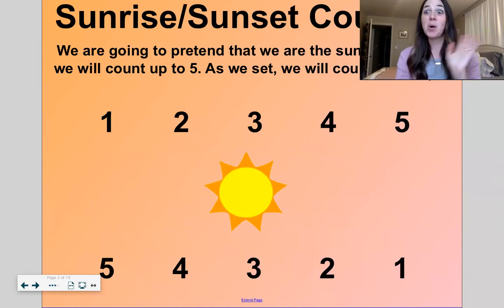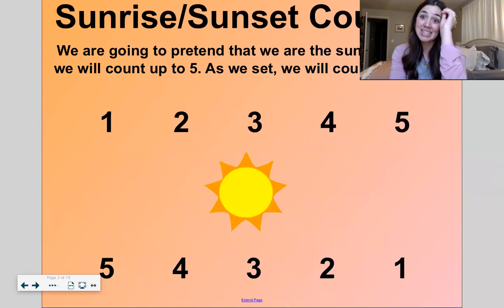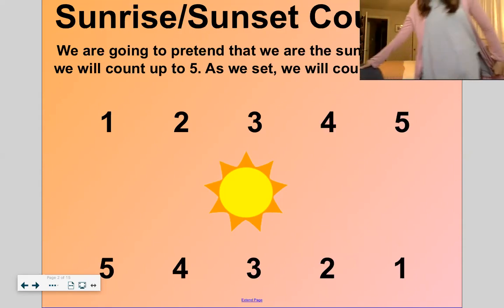First let's start off with one of my favorite counting games. It's called sunrise and sunset counting. So let's stand up to do that. In sunrise counting we're going to start down really low and then we're going to count up together to five. Ready? Do it with me.